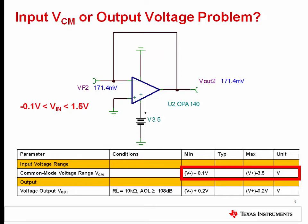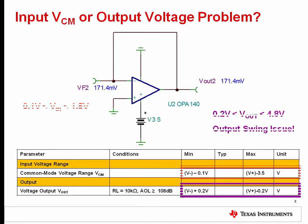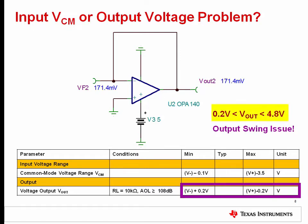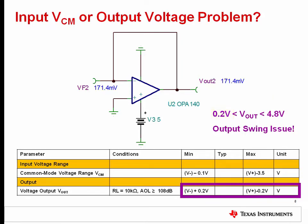Now let's look at the output voltage swing range. We can compute the output range to be from 0.2 to 4.8 volts. Based on the input signal, the amplifier wants to drive the output to 0 volts, but this is below the minimum output of 0.2 volts. Therefore, the output voltage range is being violated, which causes the actual output to clip nearly at the 0.2 volt limit at 171 millivolts.